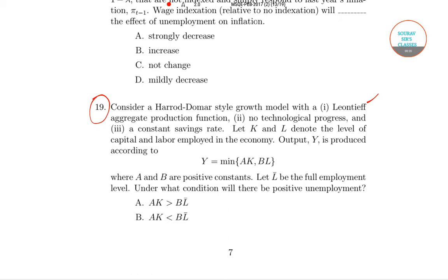Consider a Harrod-Domar style growth model with a Leontief aggregate production function and no technological progress and a constant saving rate.